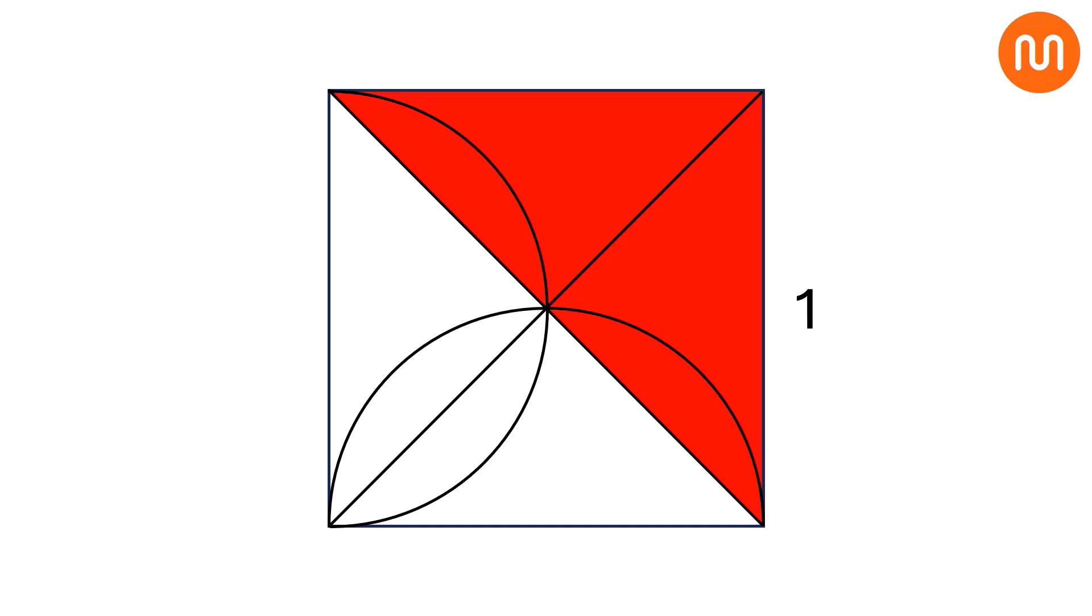Since the area of the square is one, the red area will be one-half. And that's the answer.